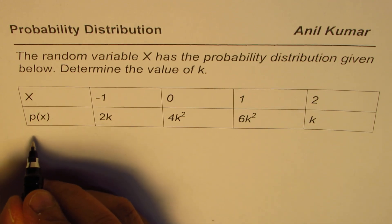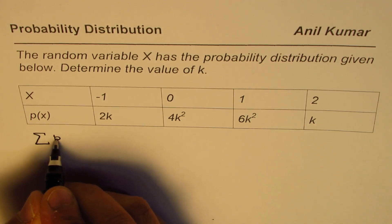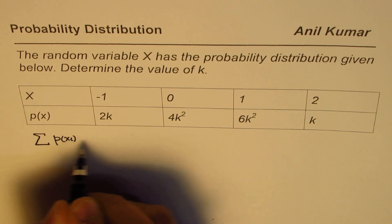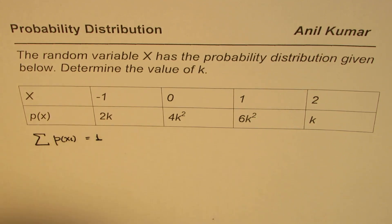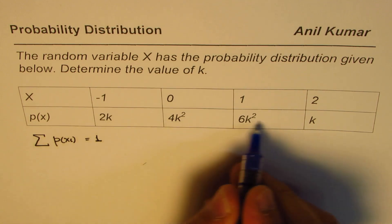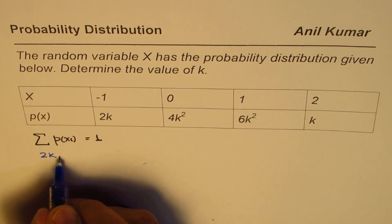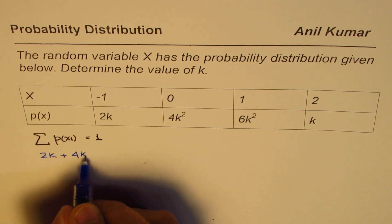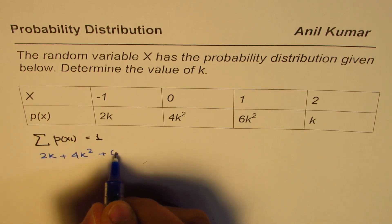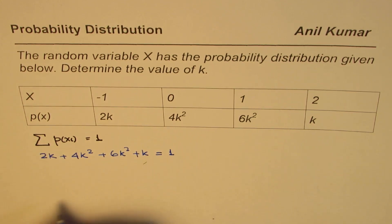Here you know that sum of these probabilities, all probabilities is equal to 1, and that helps us to find the solution of this question. So what we can do here is we can just add all these probabilities which are 2k plus 4k square plus 6k square plus k, and equate them to 1.